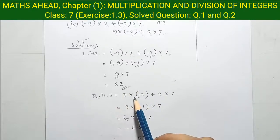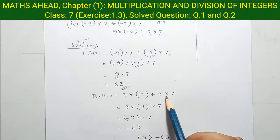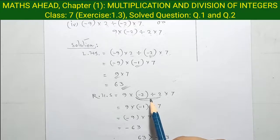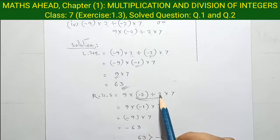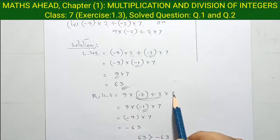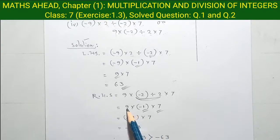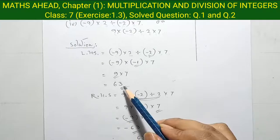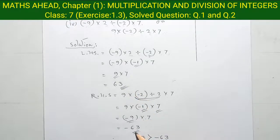Now right hand side equals 9 into minus 2 divided by 2 into 7. Here we do the division part first according to BODMAS rule, so minus 2 by 2 equal to minus 1. So 9 into minus 1 equal to minus 9 into 7, so 9 into 7 is 63. Minus and plus became minus 63. So 63 is greater than minus 63.